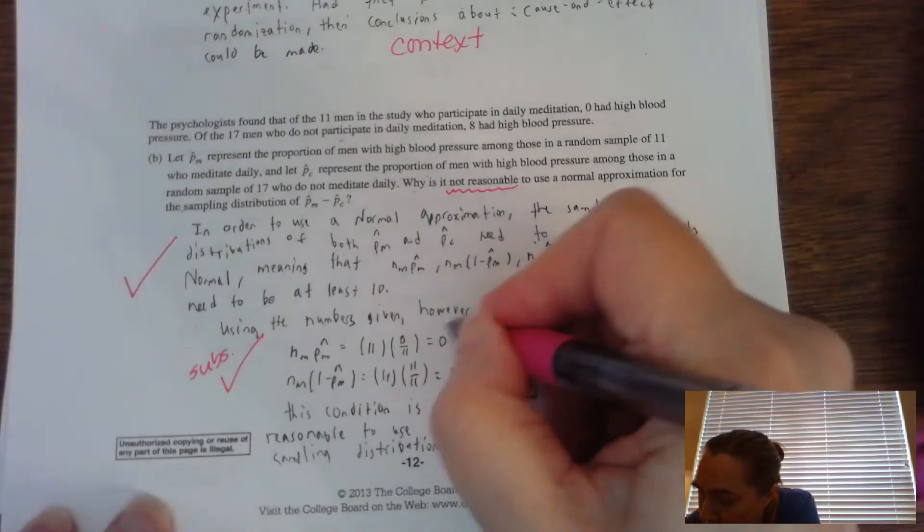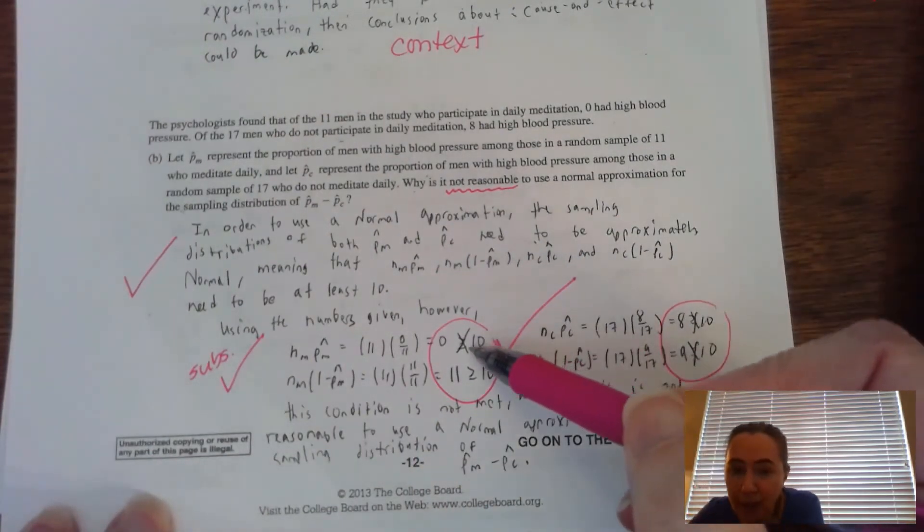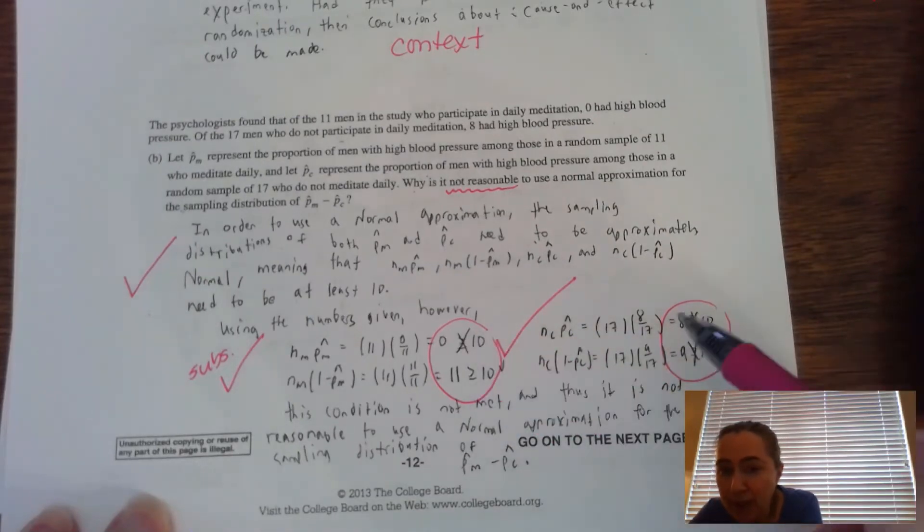Then the other thing that you have to do is you have to show the comparisons to 10. And you'll notice that this student right here showed X's to show that it was not greater than or equal to 10.